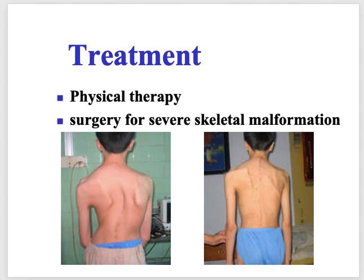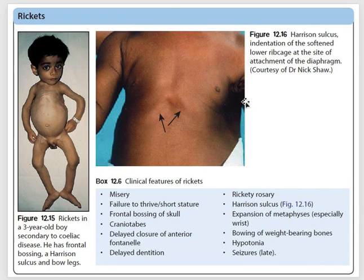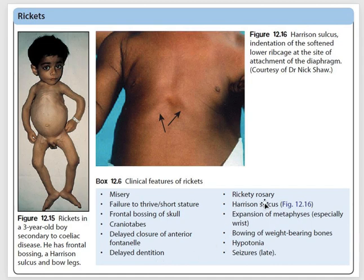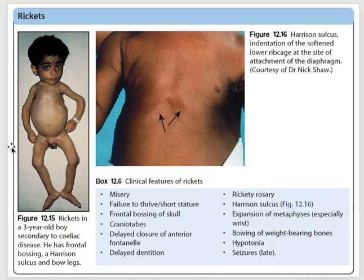To summarize clinical features: rickets in a child with celiac disease presents with misery, failure to thrive, short stature, frontal bossing of the skull, craniotabes, delayed closure of the fontanelle, delayed dentition, rickets rosary, Harrison's sulcus, expansion of the metaphysis especially at the wrist (bangle wrist), bowing of the legs, hypotonia, and seizures. Seizures can occur due to hypocalcemia in patients who have rickets.